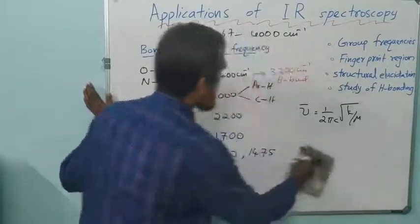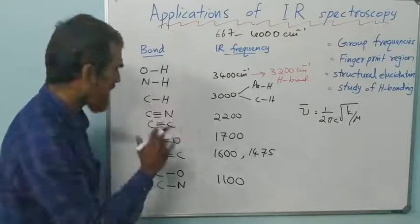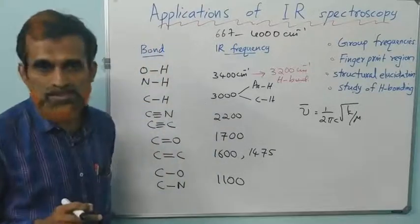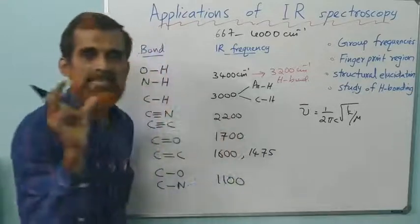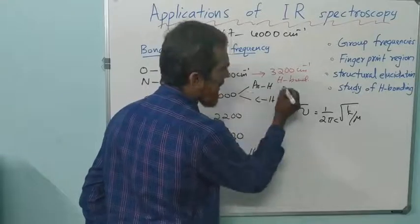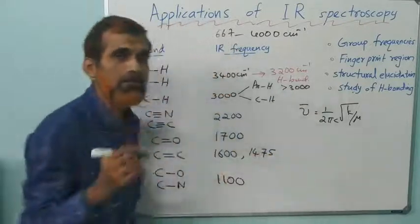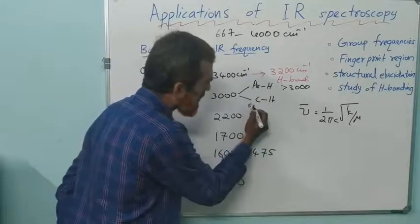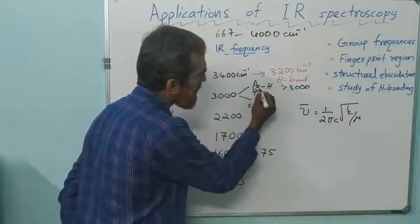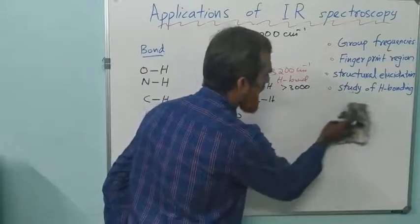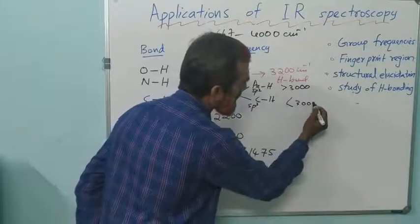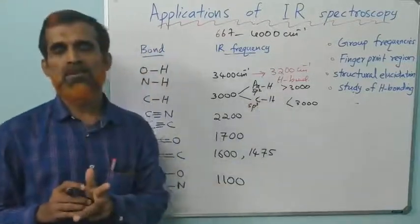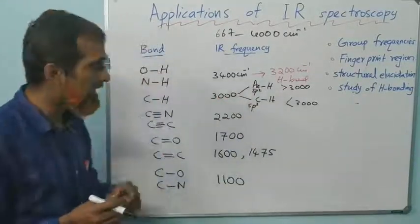Coming to other values, after that comes CH stretching, around 3000 centimeters inverse. If it is aromatic CH bond, which will be stronger, the value will be slightly above 3000. That is how we distinguish the two, aliphatic and aromatic. If it is aliphatic, that is SP3, the frequency is slightly lower than 3000, around 2850 or 2900. By this you can distinguish aliphatic and aromatic looking at the CH stretching frequency.